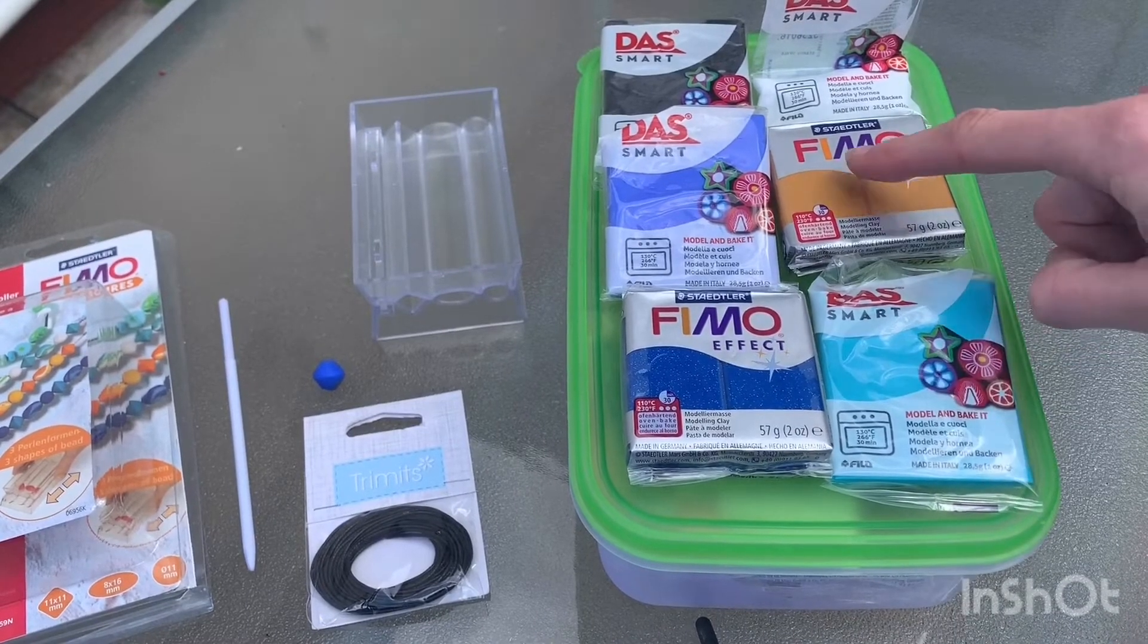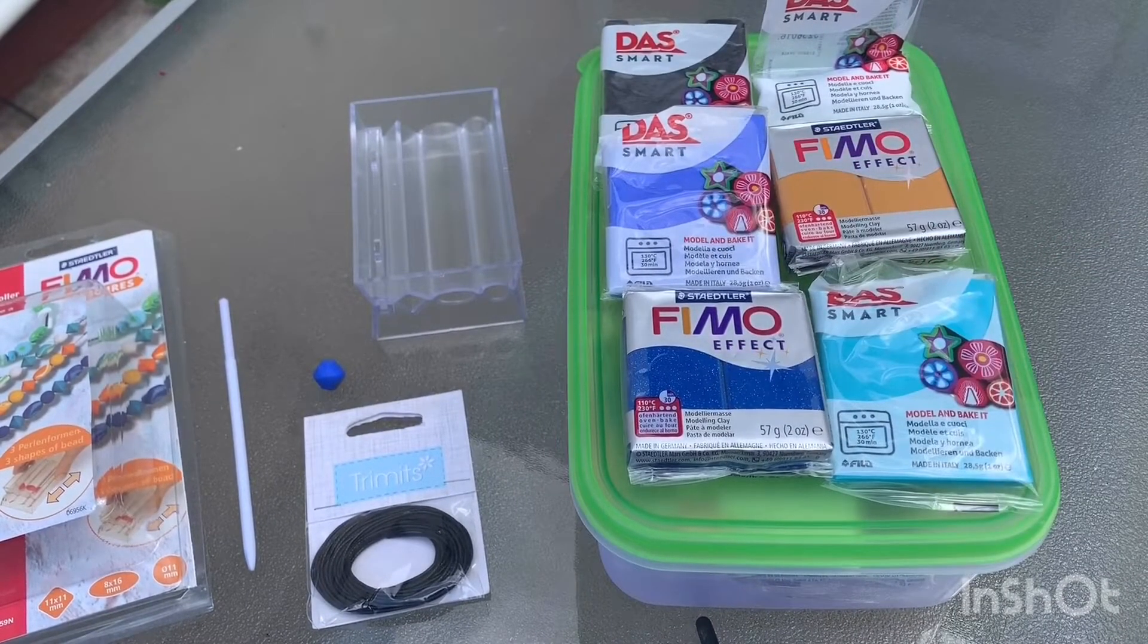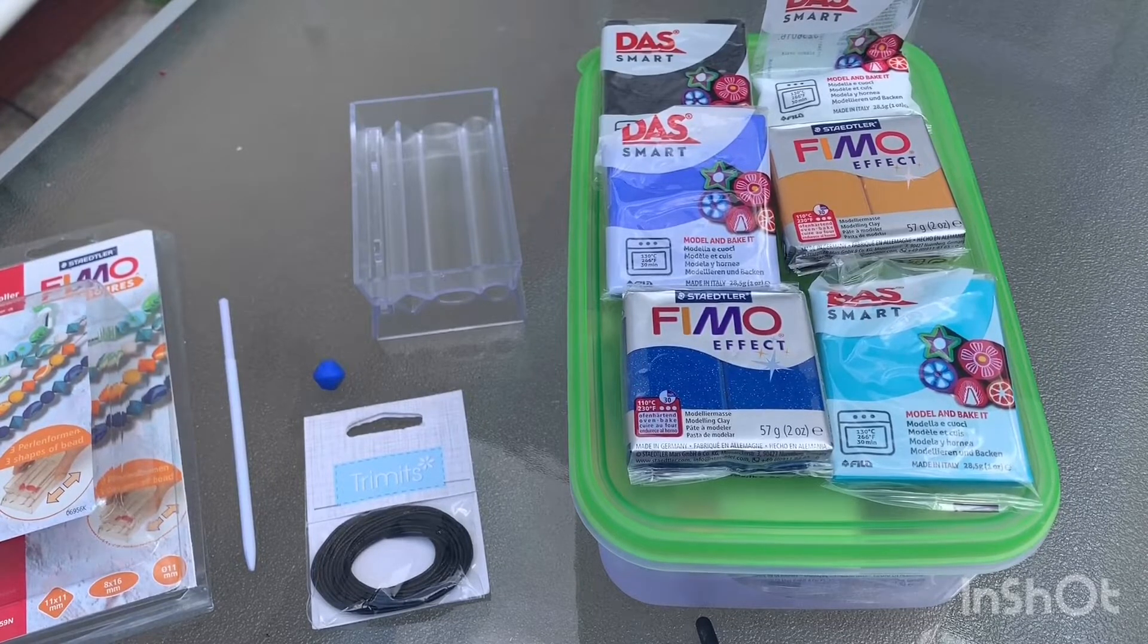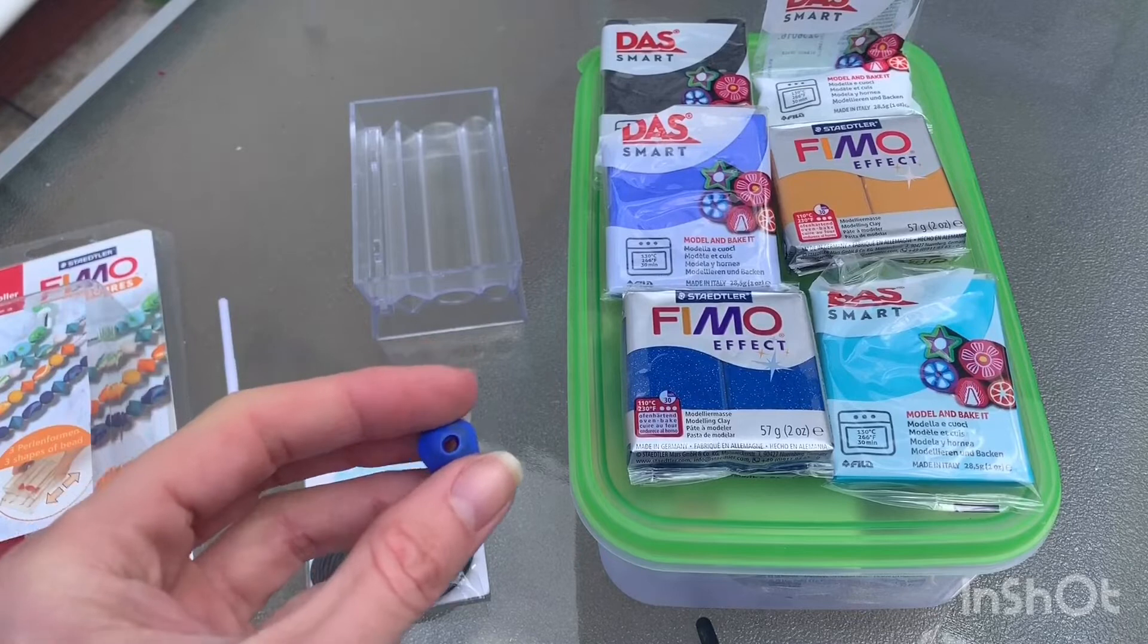I've got different colours and different types of clay. It's the oven baked clay that once you pop it in the oven for about half an hour, the bead then becomes nice and solid and firm.